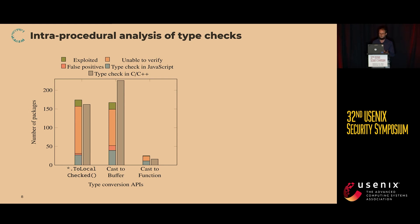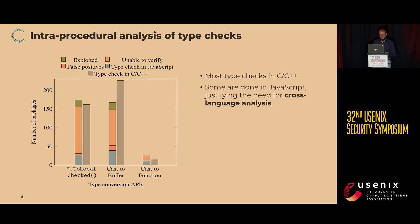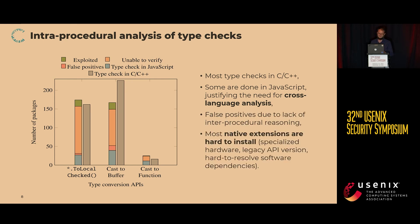We ran this package analysis on 7,600 packages from the NPM ecosystem and manually inspected each alert. We found that many packages do type checks in C++ code, but some also do type checks in JavaScript. We have a few false positives caused by the lack of inter-procedural analysis in this phase. Some alerts — the orange entries — we could not verify because we lacked the hardware or software requirements to install those packages. But we still found exploitable packages and reported them to maintainers.